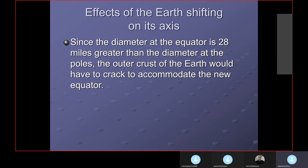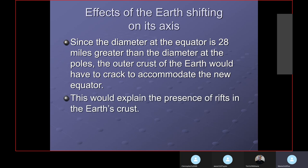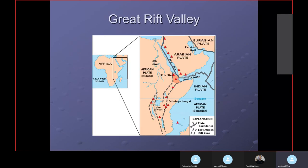Since the diameter of the equator is 28 miles greater than the diameter of the poles, the outer crust of the earth will have to crack to accommodate the new diameter if that diameter changed. This would explain the presence of rifts in the earth's crust. We see the Great Rift Valley in Africa, with the African plate, Indian plate, and Arabian plate. This is the Gulf of Suez, the Red Sea, and the Gulf of Aqaba.